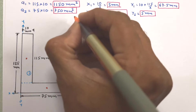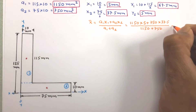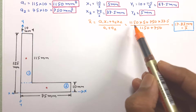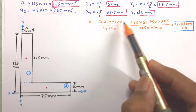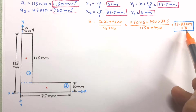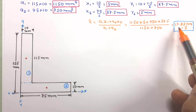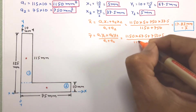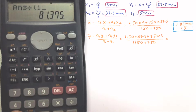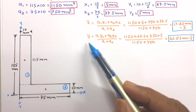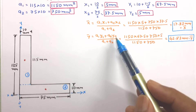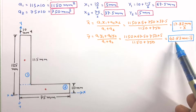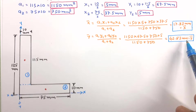Using the equation for x̄, the values of A1, x1, A2, and x2 are substituted, and after calculation x̄ = 17.83 mm. Similarly, using the equation for ȳ, the values of A1, y1, A2, and y2 are substituted, and after calculation ȳ = 42.83 mm.